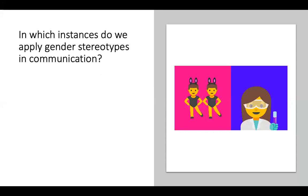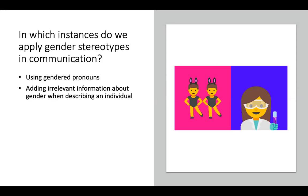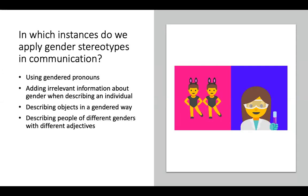When we look at which instances we apply gender stereotypes in our communication, we see that it's very frequently used when applying pronouns with a gender — for example, he, she, his, hers — but also when we add information that is not actually relevant about the gender of a person when we describe an individual. Further, when we are describing objects in a gendered way, or when we describe people of different genders with different adjectives, even though we want to describe the same fact or the same thing.